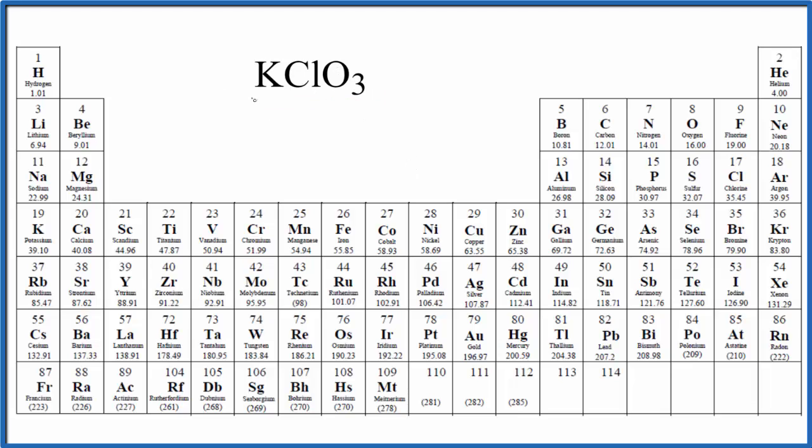So we go to the periodic table. Potassium, that's right here. It's 39.10 grams per mole. I won't write grams per mole each time. Let's do that at the end.